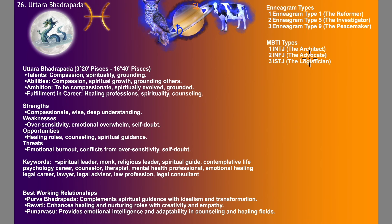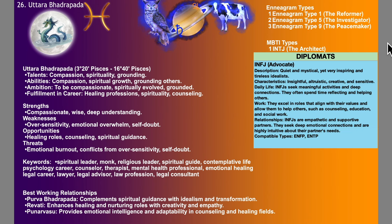The next one is INFJ, the Advocate — diplomats, quiet, mystical, yet very inspiring and tireless idealists. Insightful, altruistic, creative and sensitive. INFJs seek meaningful activities and deep connections. They often spend time reflecting and helping others. They excel in roles that align with their values and allow them to help others, such as counseling. Career in psychology, counselor, therapist, psychologist, child psychologists, counselors of all kinds, emotional mentors — there isn't such a thing yet, but I see that coming in the world.